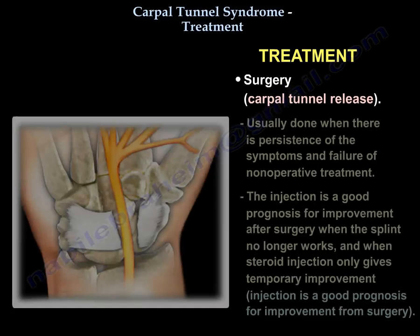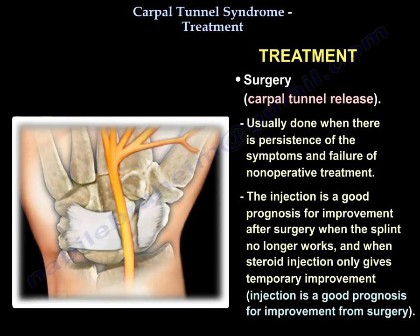The operation is usually done when there is persistence of the symptoms and failure of the non-operative treatment. The injection is a good prognostic sign for improvement after surgery. When the splint no longer works and when a steroid injection only gives temporary improvement, injection is a good prognosis for improvement from surgery.